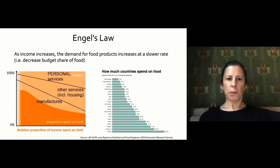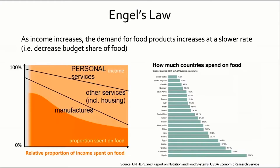Let's talk about economic access to food. There are two essential laws in agricultural economics. One is Engel's Law: as income increases, the demand for food products increases at a slower rate, meaning that as a household gets more income, they spend less of that income on food and have more disposable income to spend on other things.